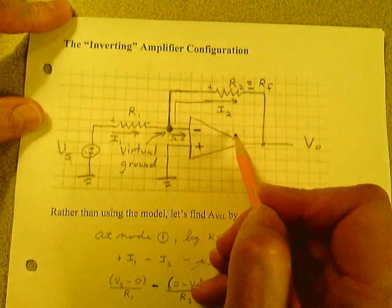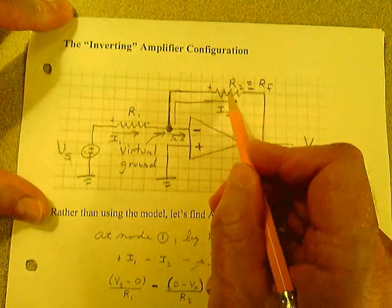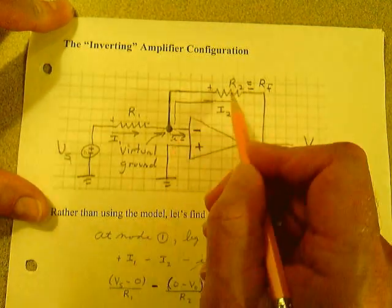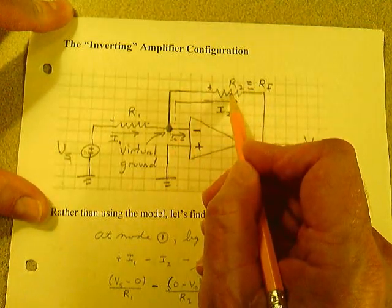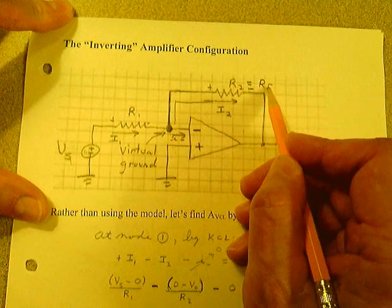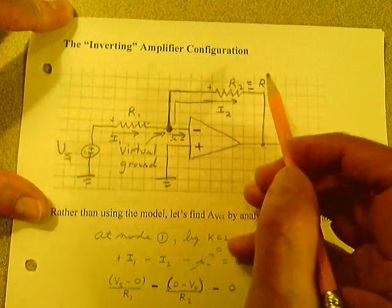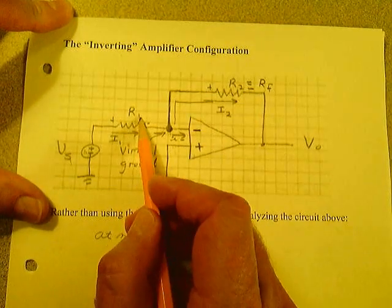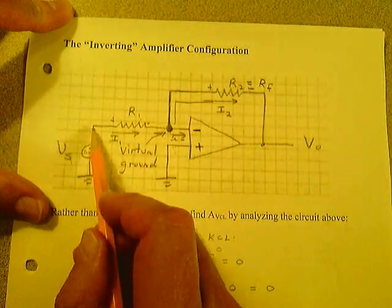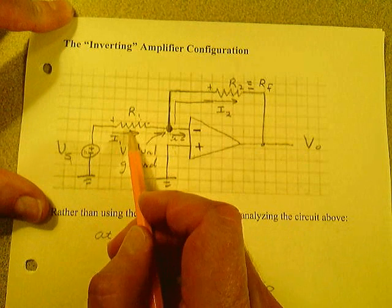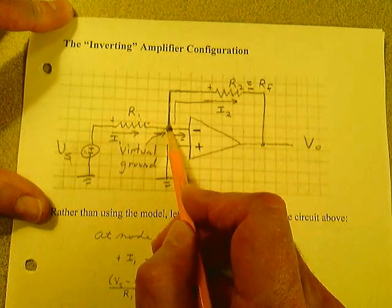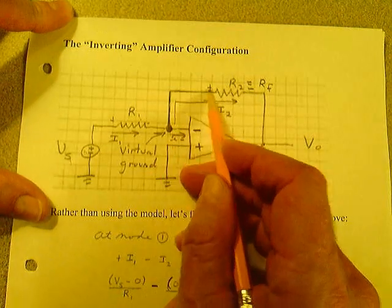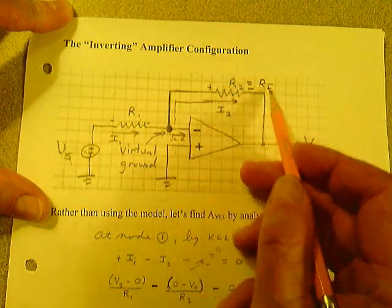In this configuration, our feedback path has a resistor in it — it's not a wire. From the output back to the negative input is resistor R2. Some books call it RF, the feedback resistor. I'm going to call it R2. Then you have your input resistance R1. The voltage source goes through R1 to the inverting input, and then we have our feedback path with resistor R2 to the output.